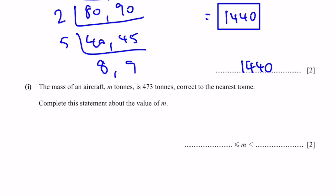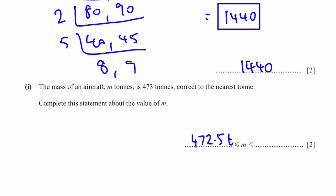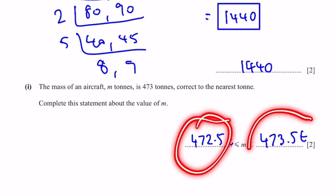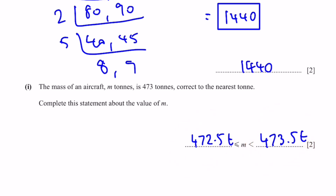Part I: The mass of an aircraft M tonnes is 473 tonnes, correct to the nearest tonne. Complete the statement about M. The lowest value is 472.5 tonnes and the greatest value is 473.5 tonnes. These are the lower and upper bounds.